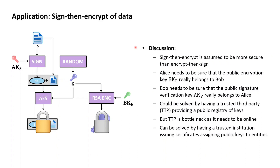A first approach to providing trust could be having a system with a trusted third party providing a public registry of the keys of all participants. With such a trusted third party trusted to only keep and hand out authentic copies of the keys, both Alice and Bob could obtain trust in the authenticity of the keys they use. However, such a trusted third party would soon become a bottleneck in the system, with the requirement to constantly be online. The load on the trusted third party would very soon reach its limit with respect to the size of the system it could support, and thus is not a practical solution.